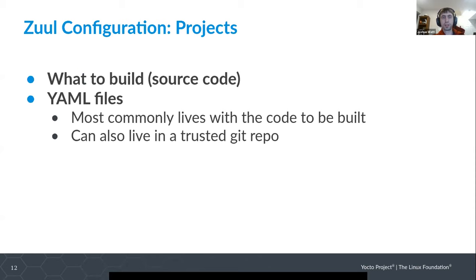Zuul takes this one step further with something called speculative execution. It looks at all the changes to be gated, stacks them in the order they will be merged with their final SHA-1s, and then builds and tests them in that order — doing this in situ. Once it builds and tests a change, it just fast-forwards the branch head. This reduces the ability for a single change to inadvertently break something by merging in a weird order. Zuul can also work ahead in the stack, starting to test changes further down before previous ones finish, with the assumption they will pass — and if they don't, it restacks and starts over.